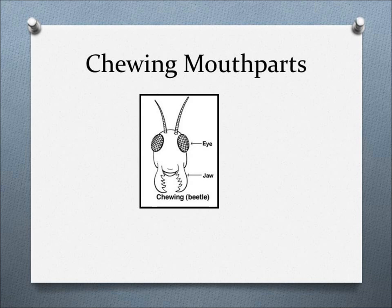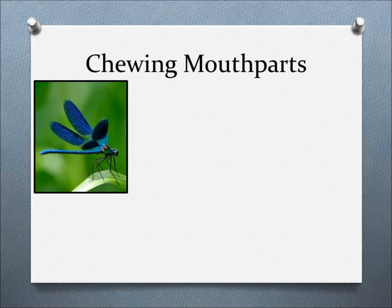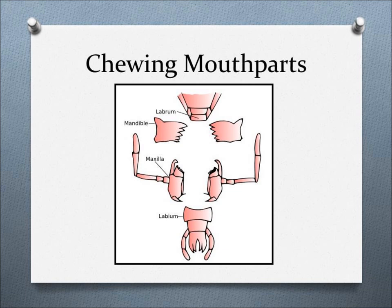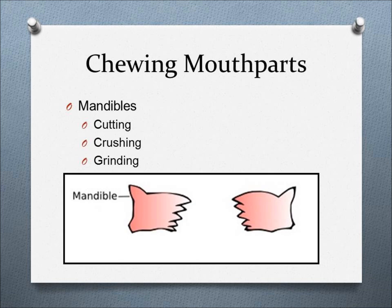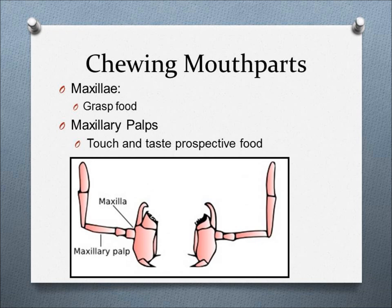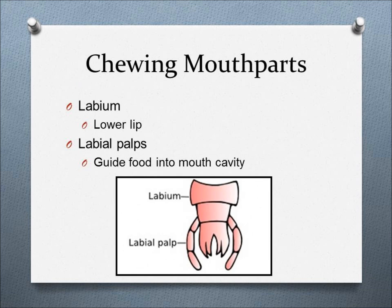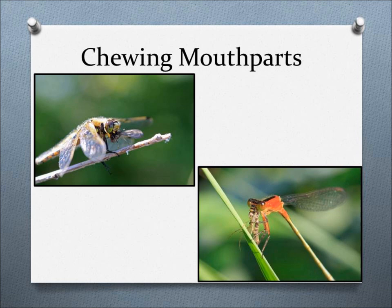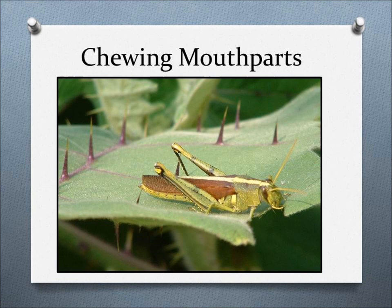Chewing mouthparts are the mouthparts for insects that chew their food, and common insects include dragonflies, damselflies, grasshoppers, crickets, katydids, and beetles. Chewing mouthparts contain the labrum, mandibles, a pair of maxillae, and the labium. The labrum is similar to the upper lip. The mandibles are jaw-like structures adapted for cutting, crushing, and grinding food. The maxillae are usually below the mandibles and are used to grasp food, each equipped with maxillary palps — antennae-like appendages that help touch or taste food. Below the maxillae is the labium, or the lower lip, followed by labial palps that help guide food into the mouth cavity. On top of the labium is a tongue-like part called the hypopharynx. Insects with chewing mouthparts can eat other animals, like dragonflies and damselflies do, eat plant matter like grasshoppers, or consume both plants and animals, like some crickets.